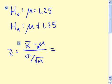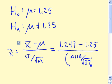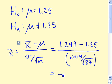And in this instance, our x-bar is 1.247. The mu here is always the mean under the null hypothesis, so 1.25, divided by our sigma, 0.0118, over the square root of 37, our sample size. And if we calculate this, this turns out to be about minus 1.5465.